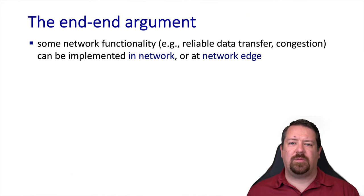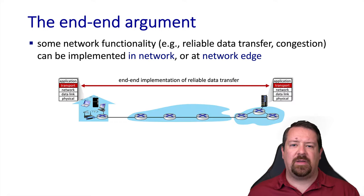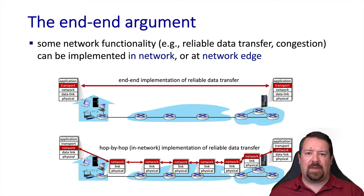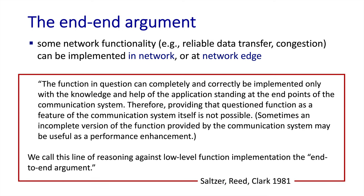Related to this is the end-to-end argument, which says that while some functionality can be implemented at multiple places — either in the middle of the network or at the edge — other things must be implemented at the edge to work correctly. For example, reliable data transfer works at the transport layer, meaning it's implemented at the edge. It would be possible for a network layer to implement hop-by-hop reliable data transfer, but there's always the possibility that some error would be introduced along the way, such as a bit flipping in a router's memory. So the end-to-end layer would still have to implement reliability even if it were offered at the network layer, making it redundant and thus left out of IP.